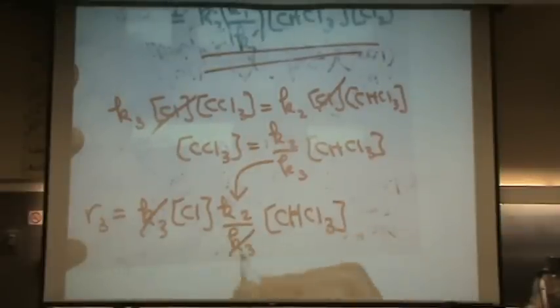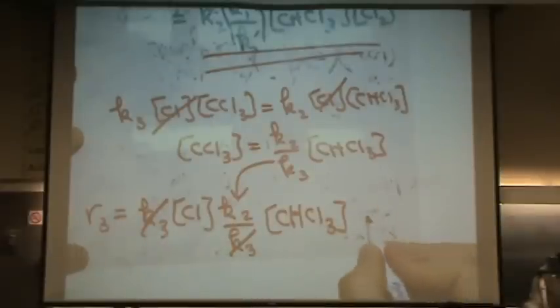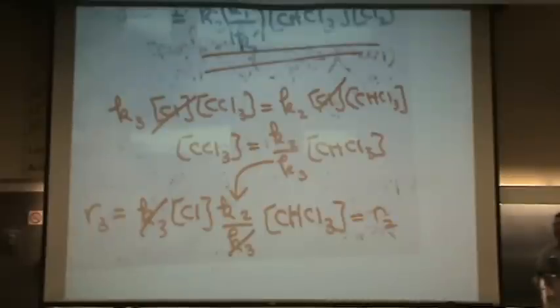Oh, the K3s cancel. Oh, what did I just get? I got R2 back out. Does that make sense? So it becomes circular. Which you wouldn't have known if you hadn't tried it.